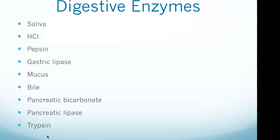Pancreatic bicarbonate: originates in the pancreas and neutralizes the acidic contents of the stomach; this also occurs in the small intestine. Pancreatic lipase: originates in the pancreas and digests lipids and fats in the small intestine. Trypsin: originates in the pancreas and small intestine, and digests proteins in the small intestine. There are a lot of enzymes to know, and all nine of them are important — there's not really one more likely to be tested on than another.